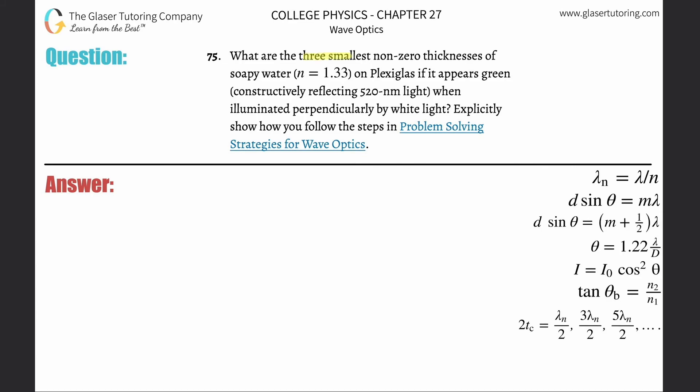Number 75, what are the three smallest non-zero thicknesses of soapy water with an index of refraction 1.33 on plexiglass if it appears green, which gives a reflecting color of 520 nanometers of light when illuminated perpendicularly?